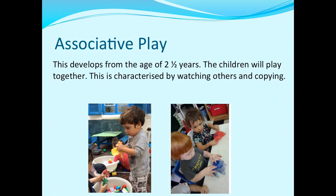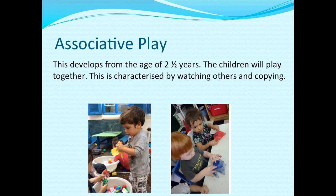Moving on to about two and a half years old, this is where we see the introduction of associative play. Children here will start to play together, and generally this is characterised by watching and then copying. So it's not really cooperative — they're not doing things to help each other during play — but there is certainly more involvement with their peers. As you can see in one picture, Tom is sorting and playing with bricks, and in another Ori and Matan have ice play, with Matan looking over to Ori — a clear example of associative play.